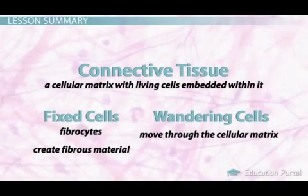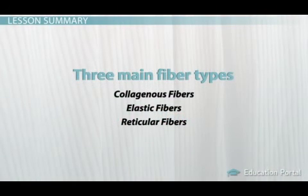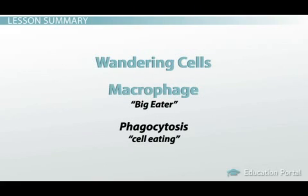There are two main types of cell in connective tissue: fixed and wandering. Fixed cells do not move and create a fibrous material that helps make up our connective tissue. There are three main types of fiber created by fixed cells: collagenous, elastic, and reticular. These fibers help make up the matrix of several connective tissues, such as areolar or loose connective tissue and fat or adipose connective tissue. Wandering cells move throughout the connective tissue matrix. Macrophages, which eat dead and harmful cells, as well as the cells which make up blood connective tissue, are examples of wandering cells.